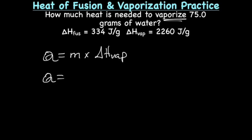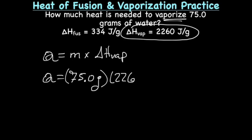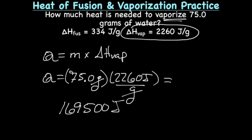Q is the amount of heat. We know we have 75.0 grams, and we're going to multiply that by the constant for water for heat of vaporization, which is 2260 joules per gram. So grams will cancel out, and when we multiply, I got 169,500 joules.